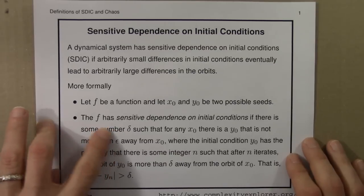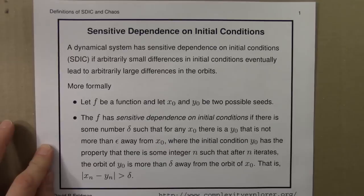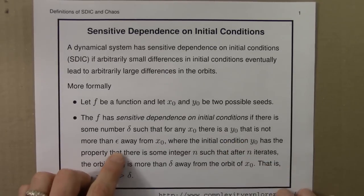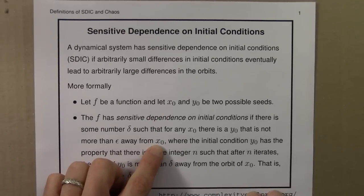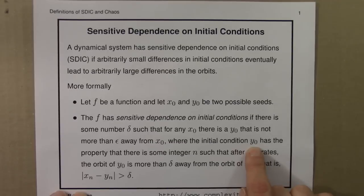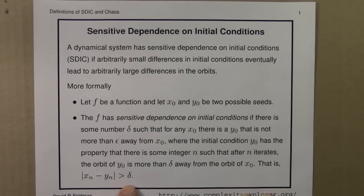There needs to be some number delta, such that for any initial condition x₀, there is some other initial condition y₀ that's within epsilon of x₀. It's not more than epsilon away from this first initial condition. Moreover, this initial condition y₀ has the property that there's some number n, so that after n iterates, the orbit of y₀ is more than delta away from the orbit of x₀. In other words, xₙ the nth iterate of x, minus yₙ the nth iterate of y, is greater than this number delta.